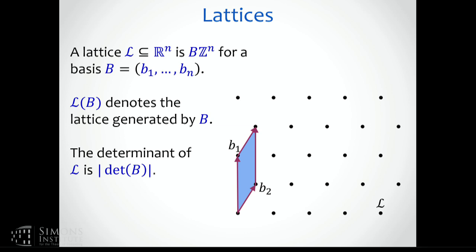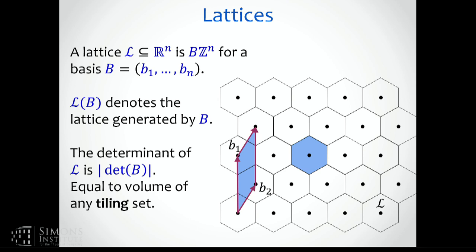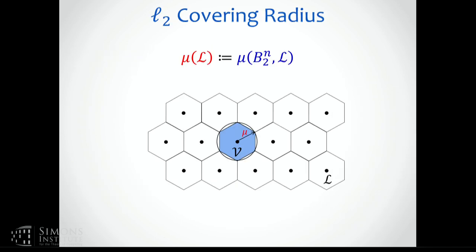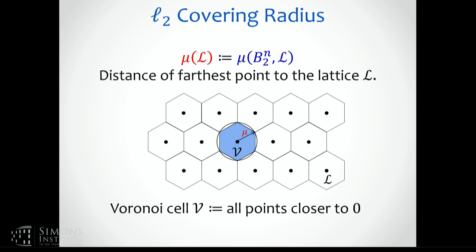On lattices: the determinant is not only the volume of a fundamental parallelepiped, but also the volume of any domain that tiles space with respect to the lattice. In particular, the determinant equals the volume of the Voronoi cell. The L2 covering radius, for a general lattice, can be interpreted geometrically: you look at the Voronoi cell, find the point on it farthest from the origin — which will be one of the vertices — and that's the radius of the smallest ball containing the Voronoi cell.